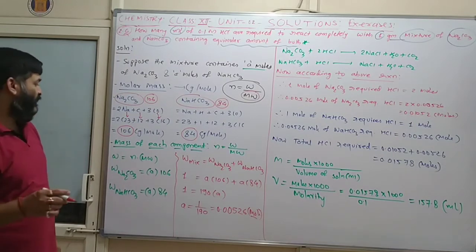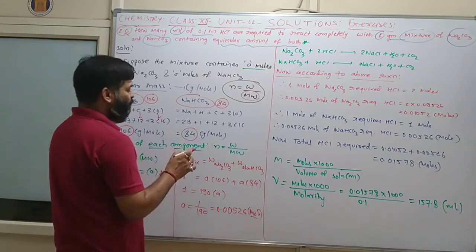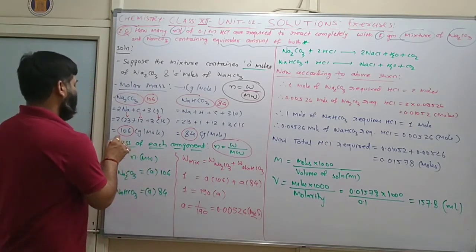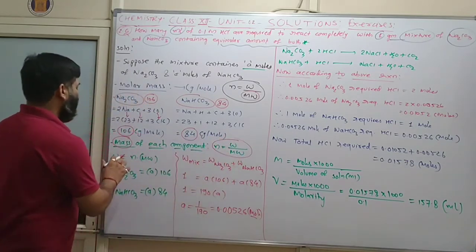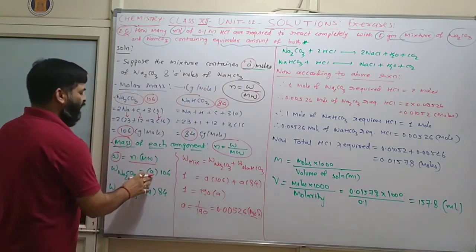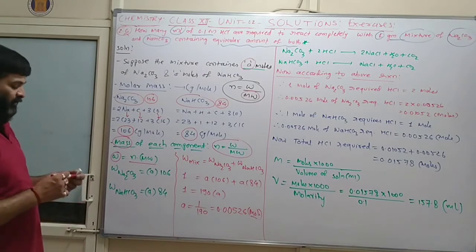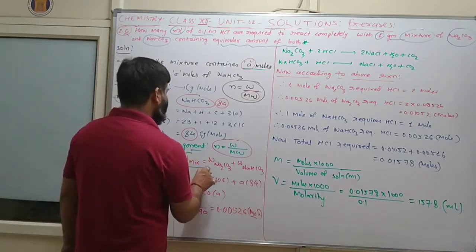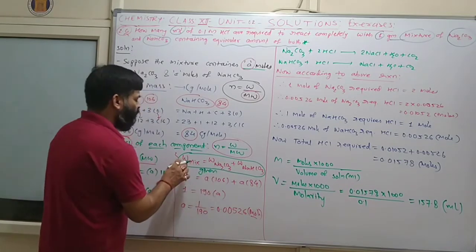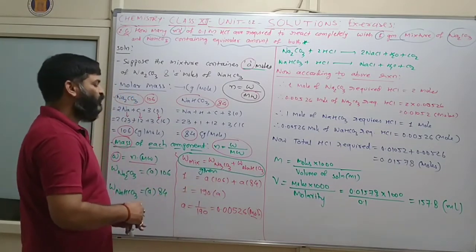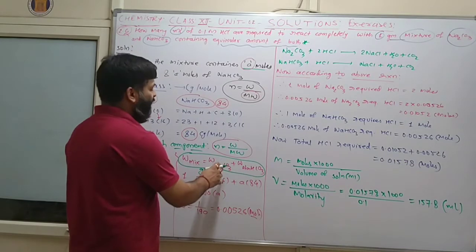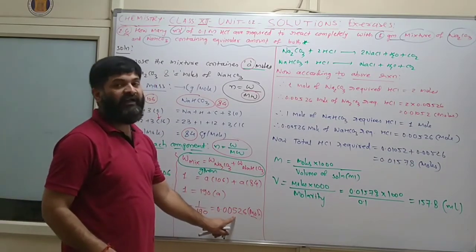Weight = moles × molecular weight. So weight of Na2CO3 = 106A and weight of NaHCO3 = 84A. Total weight of mixture = 1 g, so 106A + 84A = 1, giving A = 1/190 = 0.00526 mol each.